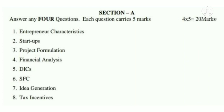Cross-check the topics listed here. The Section A short questions are: 1. Entrepreneur Characteristics, 2. Startups, 3. Project Formulation, 4. Financial Analysis, 5. DICS, 6. SFC, 7. Idea Generation, 8. Tax Incentives. These match exactly the syllabus topics covered. Questions 1 through 5 come from Units 1 and 2.